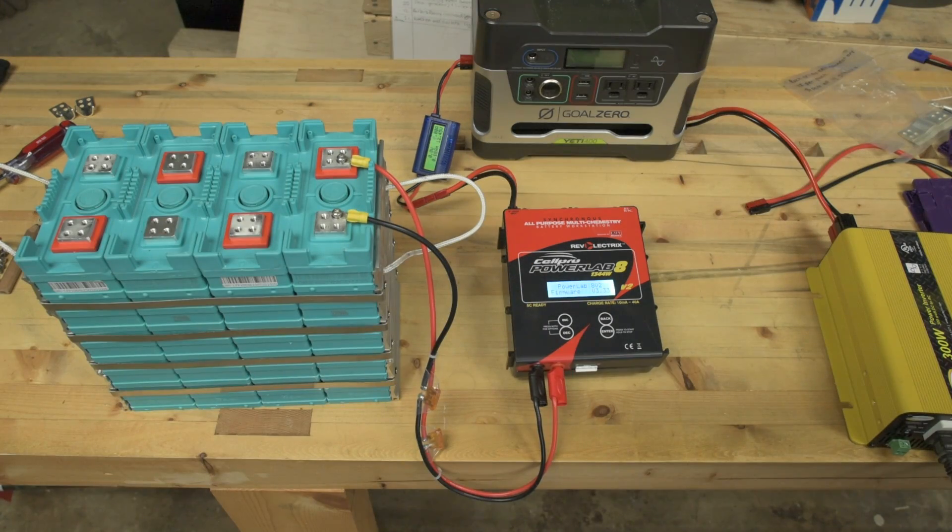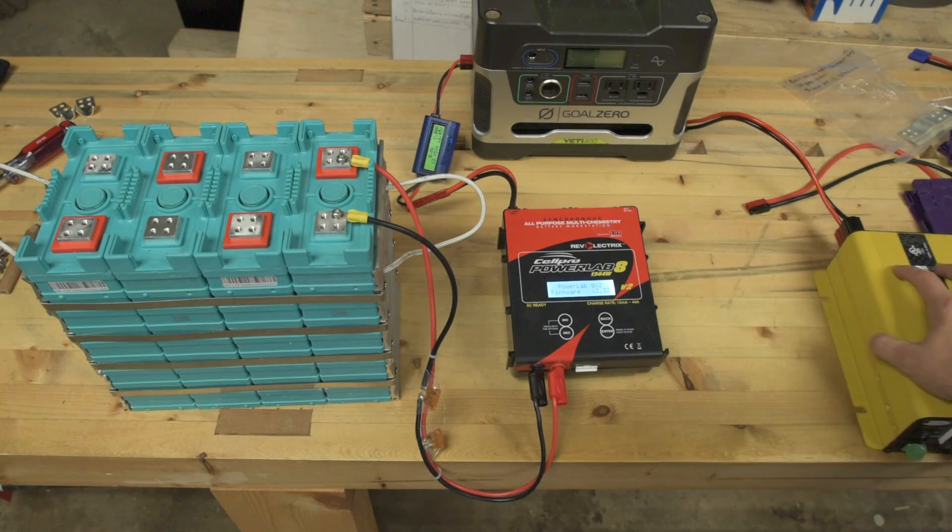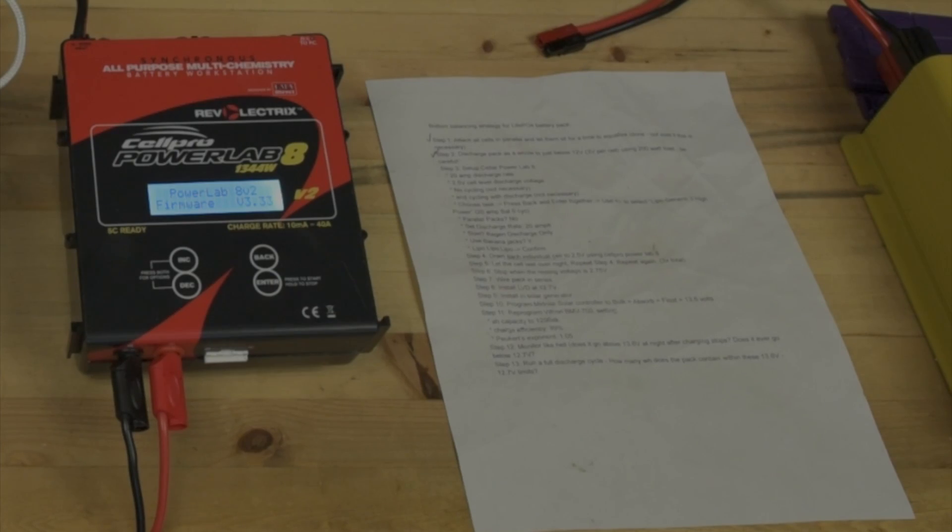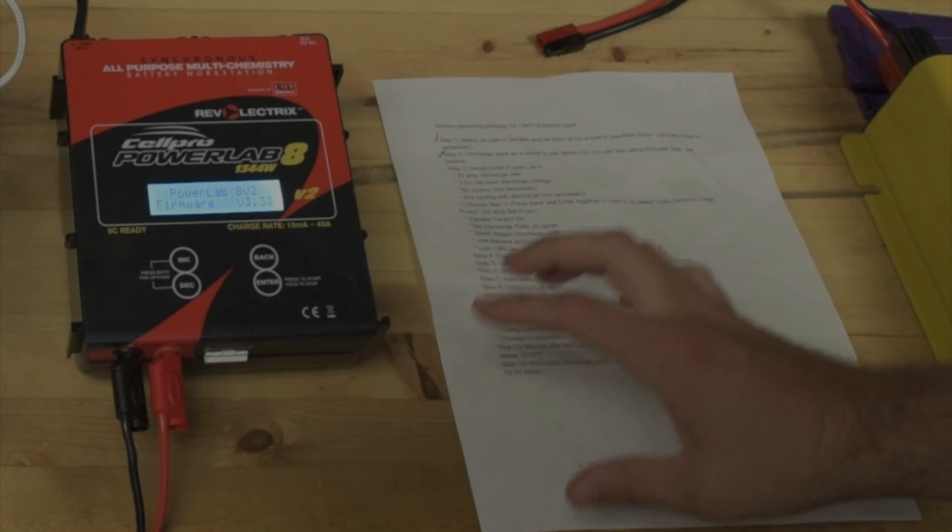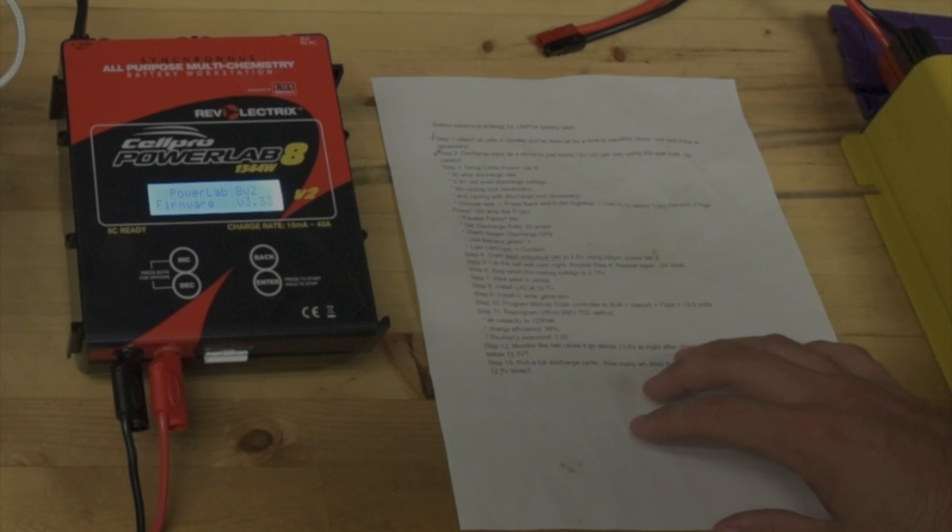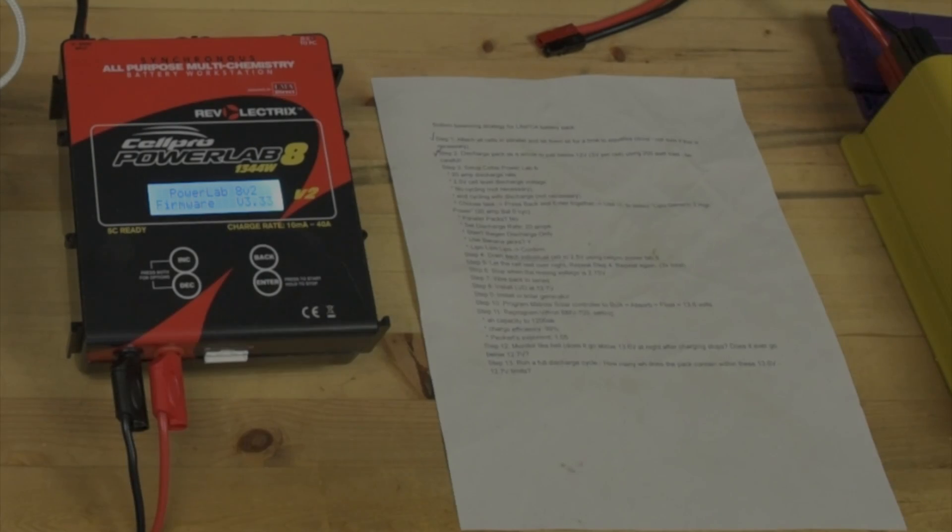This is the first time I've ever used the Cell Pro Power Lab 8. EV4U Custom Conversions has a video on how to operate it for regenerative discharge when bottom balancing these cells. It's a pretty good video - that's actually what I use to do this. I'm going to do an abbreviated version that's hopefully a little faster.